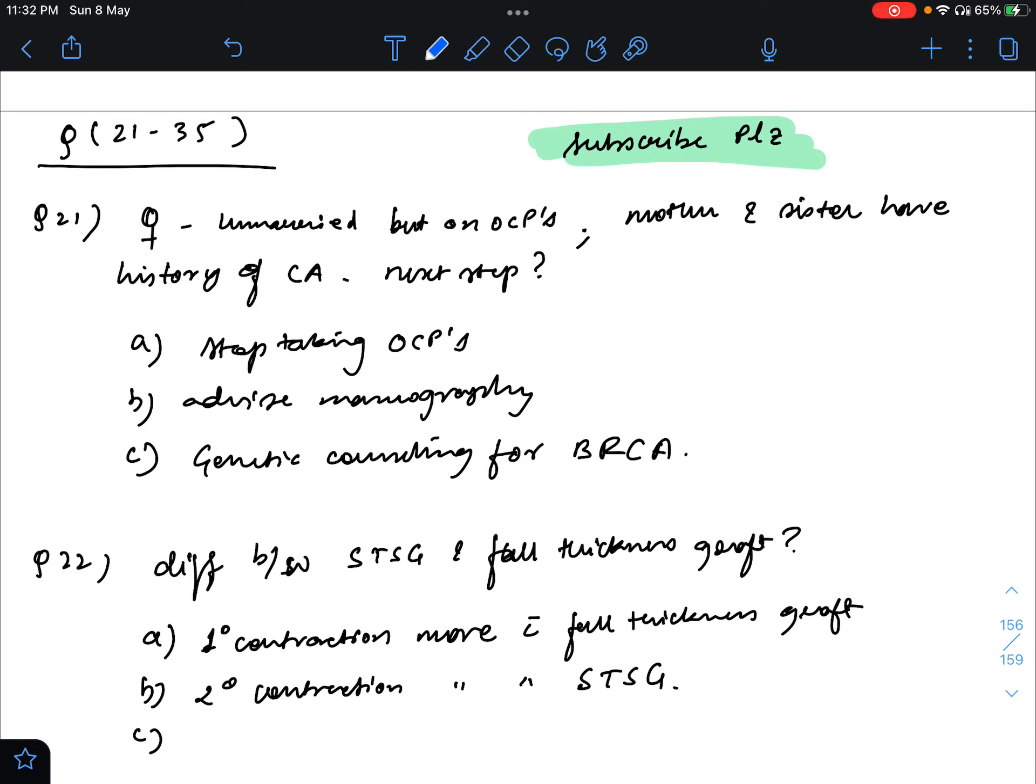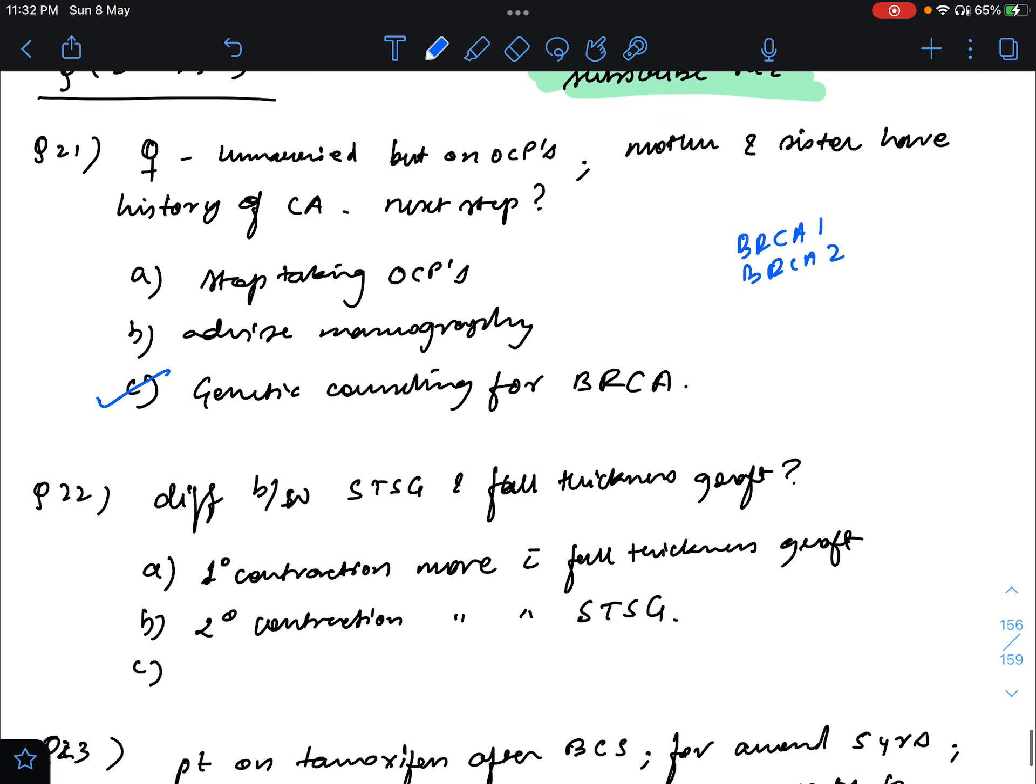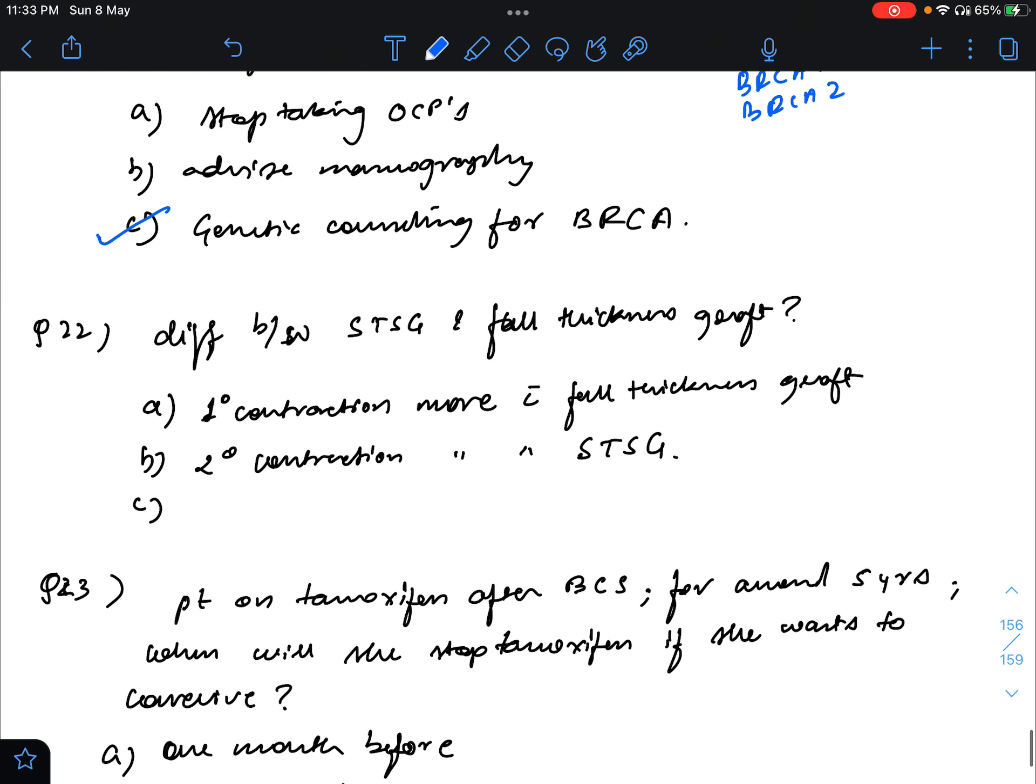So there was a question: female unmarried but on OCPs, and mother and sister have a history of carcinoma. Next step would be what? So in this case, we will go for genetic counseling for BRCA gene. As we know, both BRCA1 and BRCA2 are associated with familial carcinoma. So she may be having the risk of that. That is why we have to do genetic counseling for BRCA.